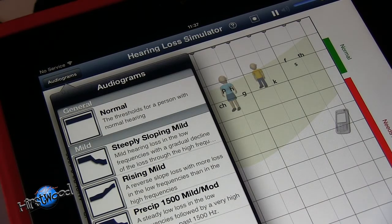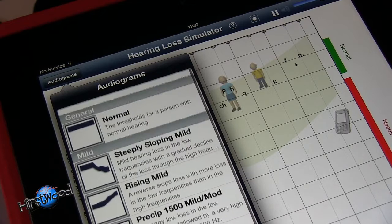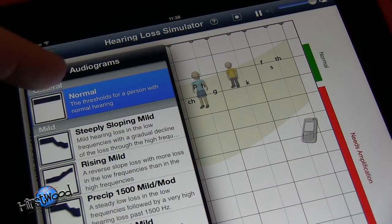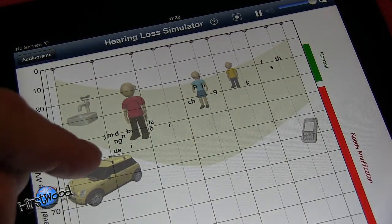Just tap on that and then we can scroll through these. Let's have a look - let's go somewhere up here and let's just do normal hearing first of all. Then tap anywhere out, and then let's have a listen to a car.